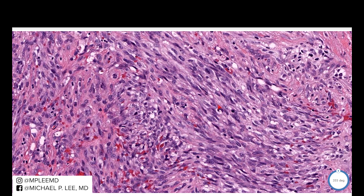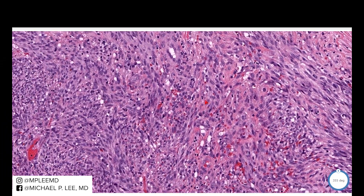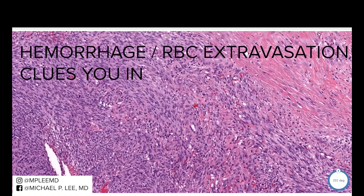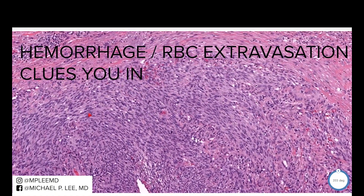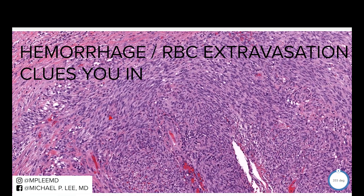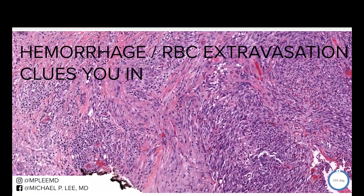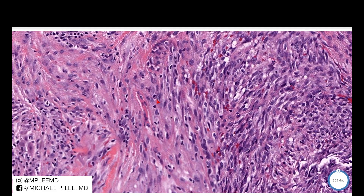That's the biggest clue — I tell our trainees that if you see a vascular lesion that has hemorrhage and red blood cell extravasation, you should always be concerned that you're not missing a subtle Kaposi's sarcoma or angiosarcoma. There are some scattered plasma cells in here.